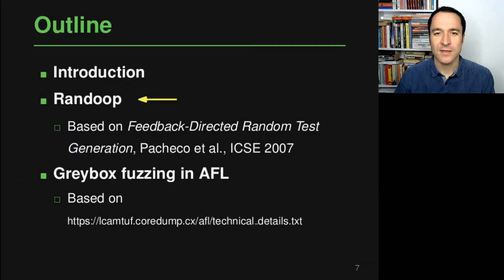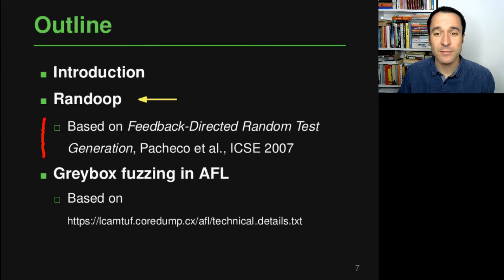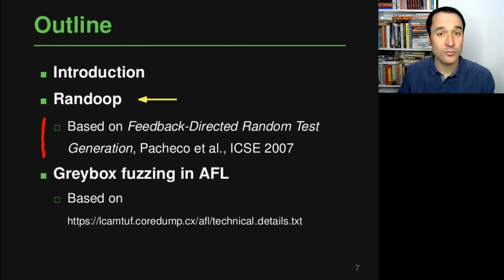Welcome back to the program analysis course. This is the second video of the lecture on random testing and fuzzing. We're going to look at an approach called Randoop, which is an implementation of feedback-directed random testing for object-oriented languages. If you're interested in more details, you should look at the paper which appeared a couple of years ago at ISSTA and gives more details and examples about this tool. Randoop is also available for download.